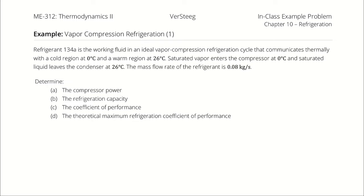Refrigerant 134A is the working fluid in an ideal vapor compression refrigeration cycle that communicates thermally with a cold region at 0 degrees Celsius and a warm region at 26 degrees Celsius. Saturated vapor enters the compressor at 0 degrees Celsius and saturated liquid leaves the condenser at 26 degrees Celsius. The mass flow rate of the refrigerant is 0.08 kilograms per second.